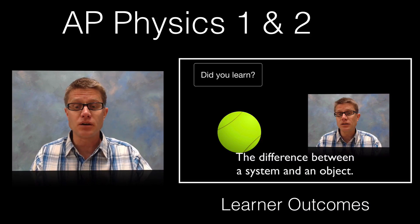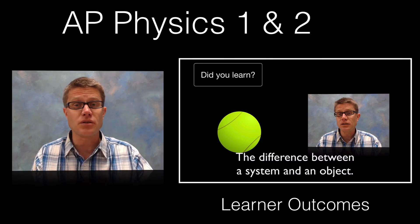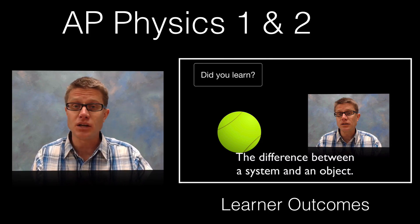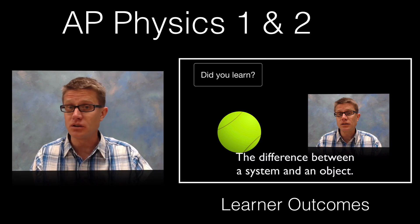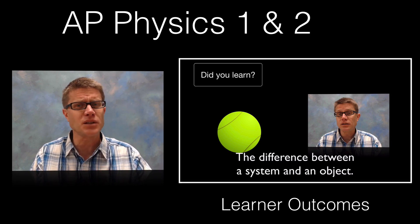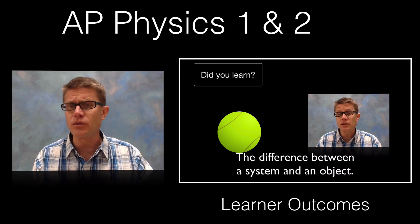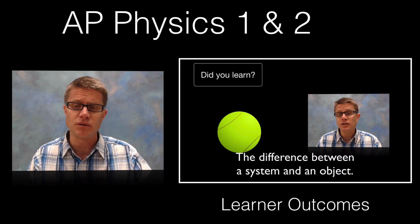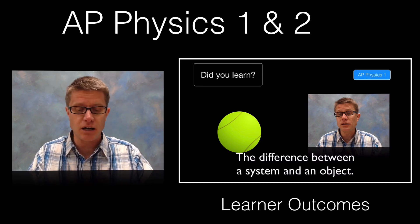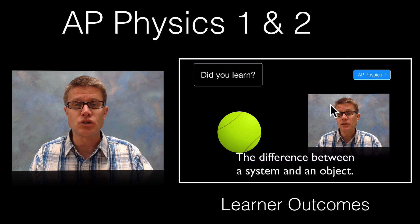At the end of every video there are going to be what are called the learner outcomes. These are the things that you should have learned in watching this video. If you are watching an AP Physics 1 video, obviously you should know all the learner outcomes at the end. But sometimes they will break them apart into you should know this for AP Physics 1 or this for AP Physics 2, and I will just put little notes up in the upper right so you can see which one it is for.